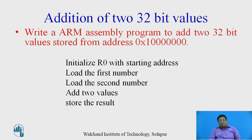The first program we will discuss is the addition of two 32-bit values. The statement for this program is: write an ARM assembly program to add two 32-bit values stored from address 0x010000. ARM is a 32-bit processor, capable of processing 32-bit values, and ARM instructions are based on load-store architecture.